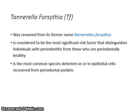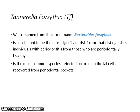Tannerella forsythia, or TF, was renamed from its former name, Bacteroides forsythius. It is considered to be the most significant risk factor that distinguishes individuals with periodontitis from those who are periodontally healthy. It is the most common species detected on or in epithelial cells recovered from periodontal pockets.